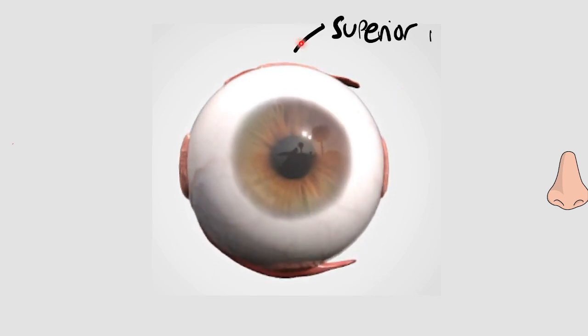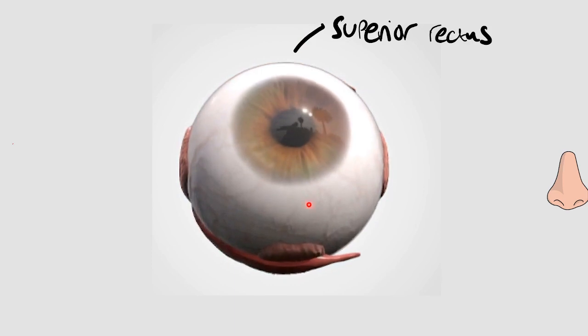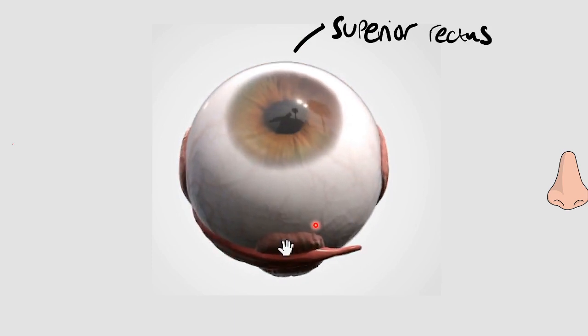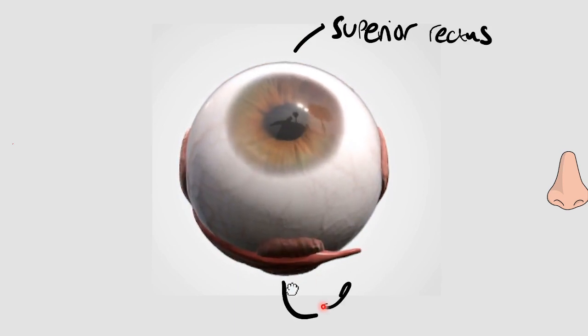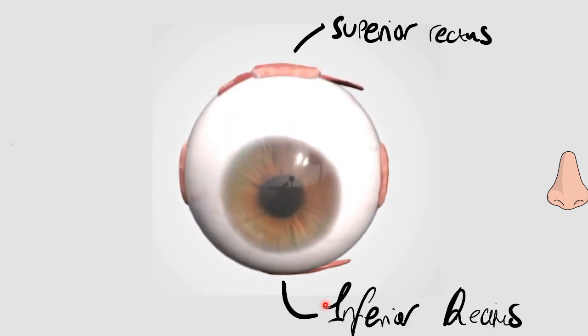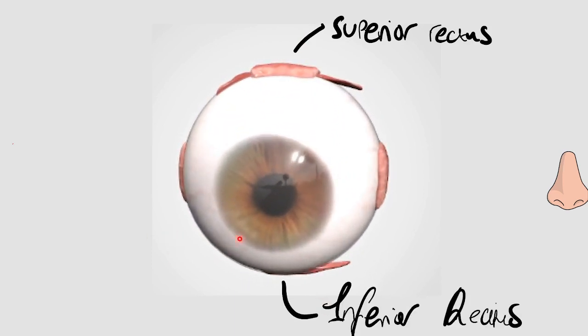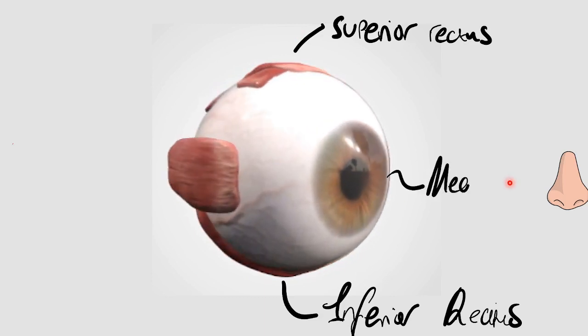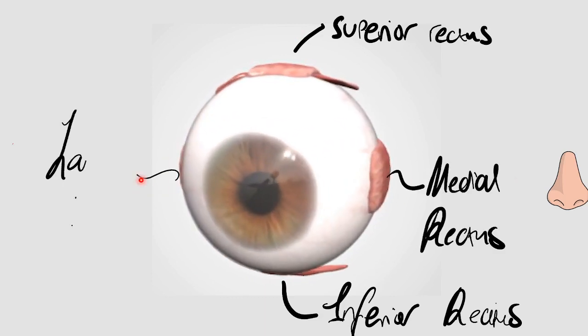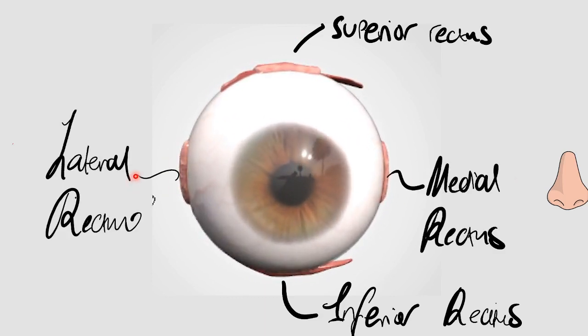On the side, pulling upwards, we've got our superior rectus. Pulling downwards, we've got our inferior rectus. Going medially towards our nose is our medial rectus. And pulling outwards laterally, abducting our eye, is called the lateral rectus.